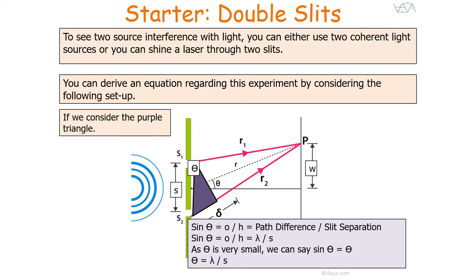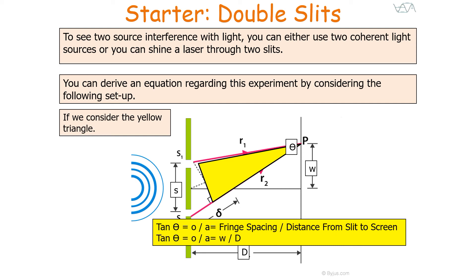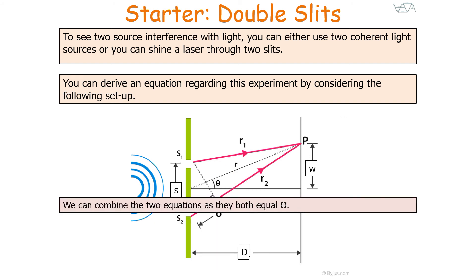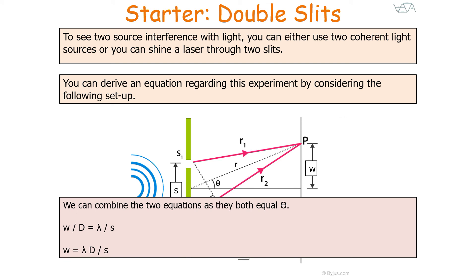We now consider the yellow triangle, which has the same theta angle — we can use similar triangles to confirm this. Tan theta equals opposite over adjacent, where the opposite is the fringe spacing W and the adjacent is the distance from slit to screen D, so tan theta equals W over D. Again, because theta is very small, we use the small angle approximation: tan theta equals theta, so theta equals W over D. Combining these two equations — both equal to theta — we get W over D equals lambda over S, which rearranges to give our equation: W equals lambda D over S.